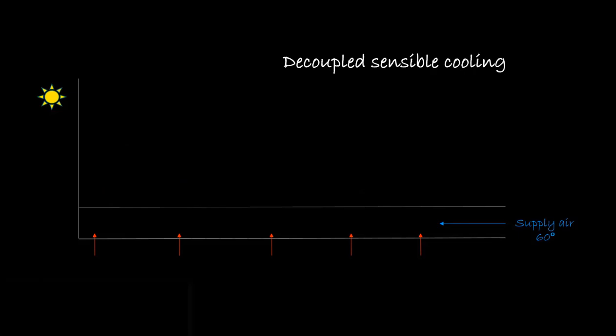Another way to minimize the effects of thermal decay is to reduce the sensible cooling responsibilities of the plenum air. This can be accomplished by ducting the supply air directly to the perimeter zones or by using decoupled sensible cooling devices, such as passive chill beams.